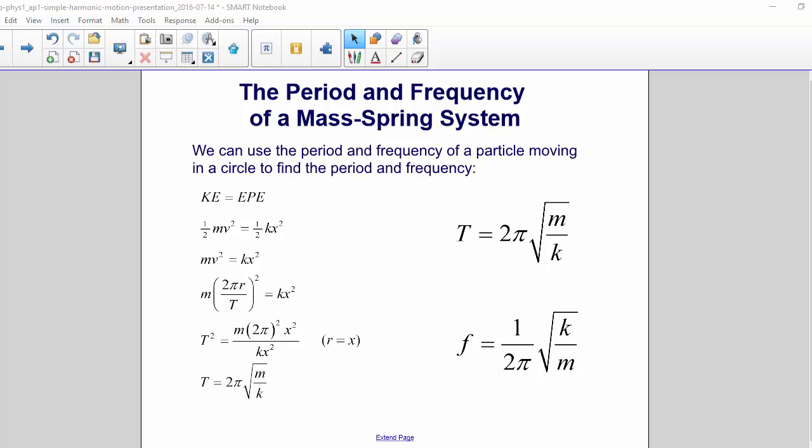Multiply both sides by 2 and you get mv² equals kx². We'll replace v with 2πr/t from uniform circular motion. Then we'll replace r with x.